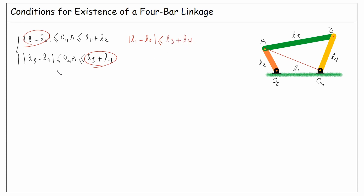And similarly, since the absolute value of L3 minus L4 is less than O4A, and O4A is less than L1 plus L2, we can say the absolute value of L3 minus L4 is less than or equal to L1 plus L2.